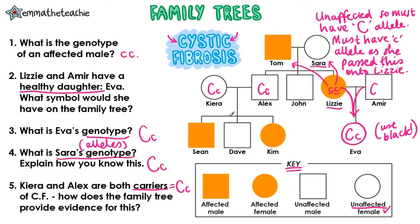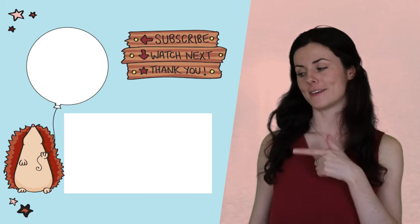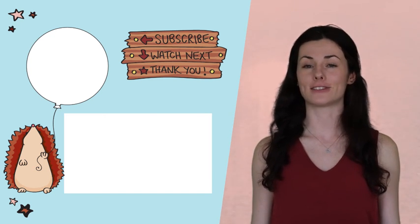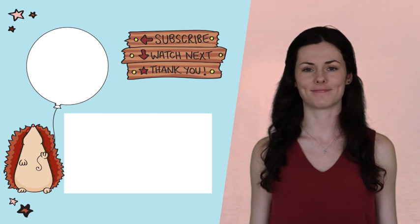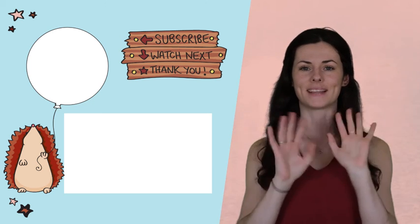But how do we have evidence for this? We can see that they've got children that are affected or have cystic fibrosis. But if we look at them, we can see that they haven't got the disorder themselves, which means they must be just carriers. How did you do in the questions? The next videos are all about variation and evolution, which I think are really interesting. Click here to watch them, and here to subscribe if you're finding this useful. Thanks and bye!